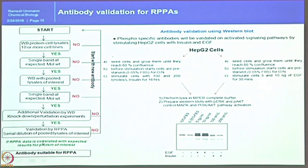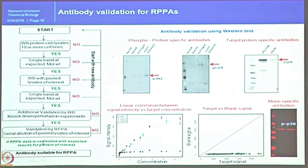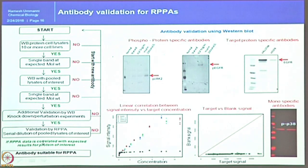If the antibody passes that stimulation test, it advances to the next step. Phospho-specific antibodies are further tested in a different cell line to confirm they behave the same way. For example, insulin increased phosphorylation while EGF only elevated EGFR levels — these mutually exclusive outcomes are used as a 'garbage in, garbage out' check to ensure data integrity.